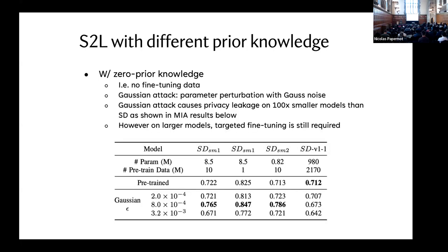For Shake-to-Leak with zero prior knowledge, when no fine-tuning data is available, the best approach we can think of is to randomly perturb the parameters, which we call the Gaussian attack. Using the Gaussian attack, we found that if we scale down the model parameters by about 100 times, we can achieve significant MIA AUC improvement — for example, about 4%. But this doesn't hold for the original large-scale Stable Diffusion V1-1 model, meaning at larger scale we still require targeted fine-tuning.